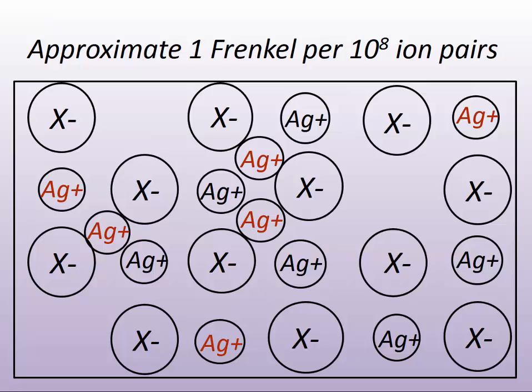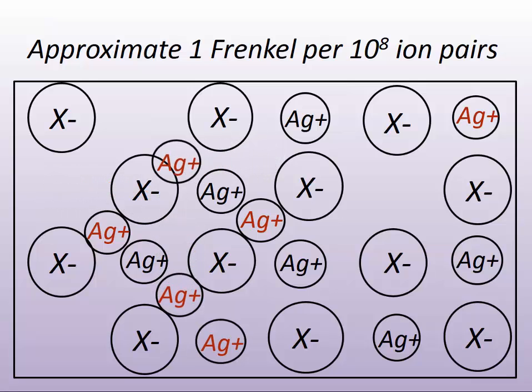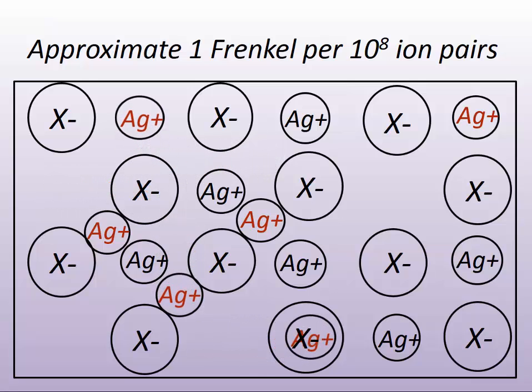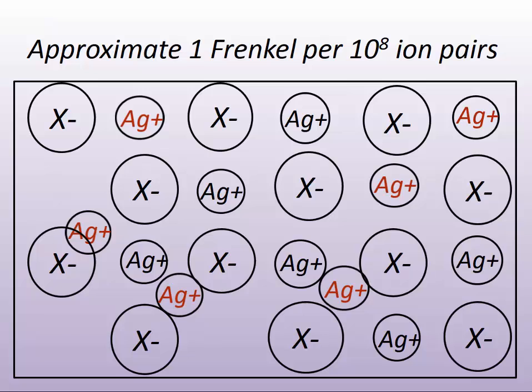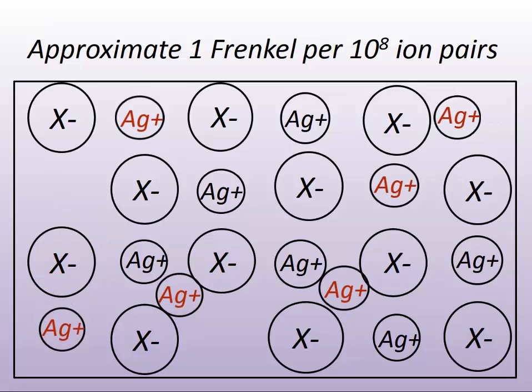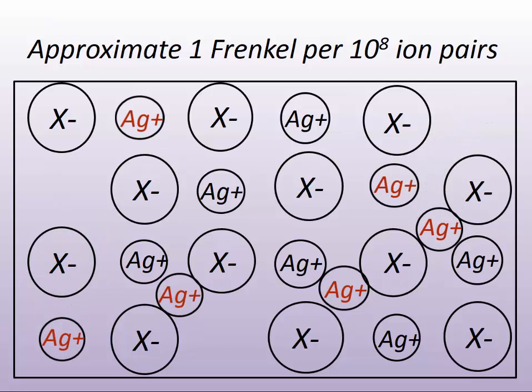Here's a little fact: there's about one Frenkel defect for every 10 to the 8th ion pairs. This translates to about a dozen or so Frenkel defects happening at any one given time in the silver crystal structure.